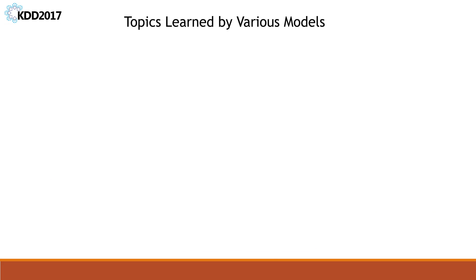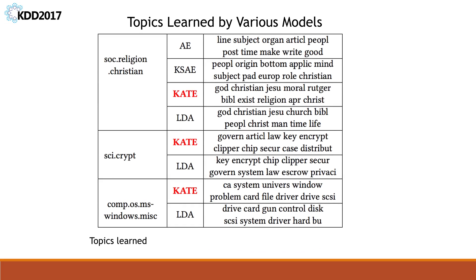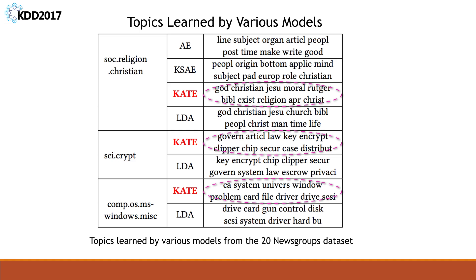Here we examine topics learned by various models from the 20 News Groups dataset. KIT generates topics that are distinct from each other and which can capture the underlying semantics very well. Besides document representations and topics, KIT can also learn meaningful word representations.